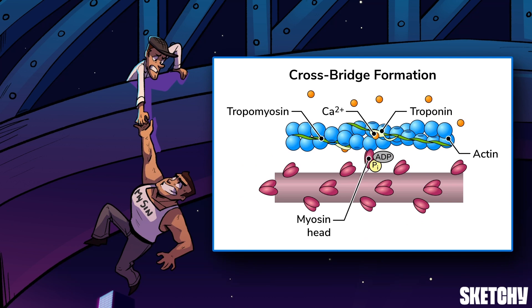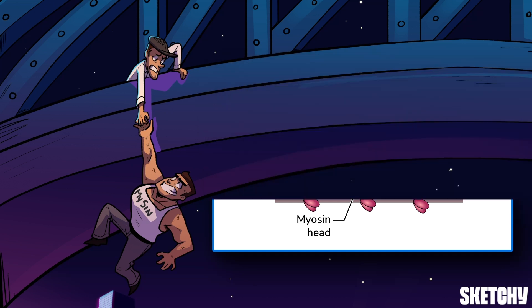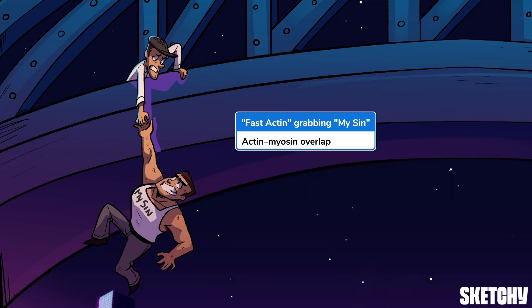Actin and myosin interact to form cross bridges, which allows thick filaments to draw thin filaments closer together, resulting in muscle fiber contraction. The amount of overlap between actin and myosin directly relates to the number of cross bridges that form. More cross bridges means more tension in the muscle fiber.